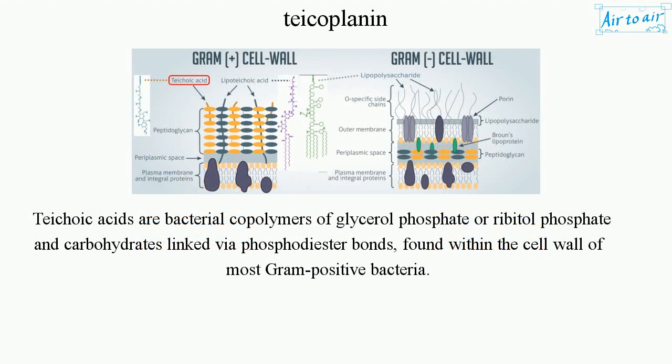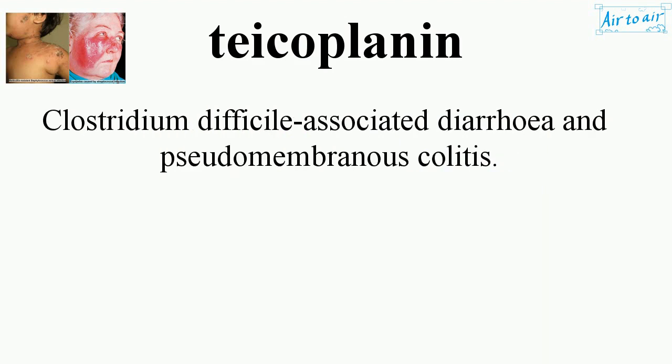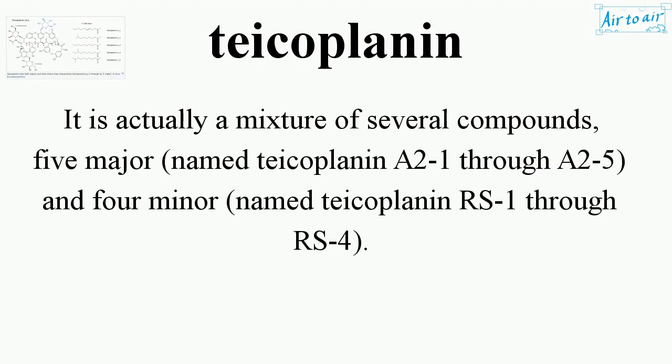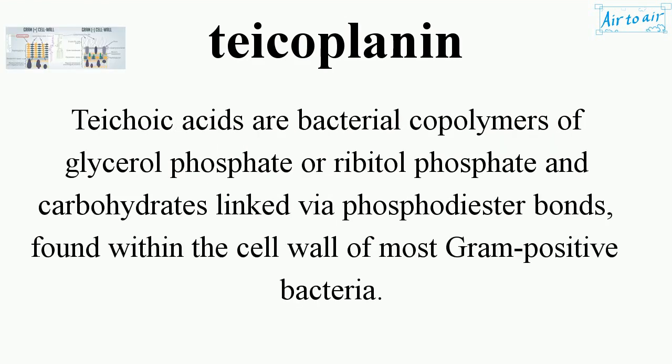Teichoic acids are bacterial copolymers of glycerol phosphate or ribitol phosphate and carbohydrates linked via phosphodiester bonds, found within the cell wall of most gram-positive bacteria. Teichoic acid.